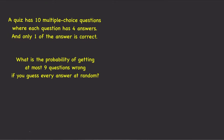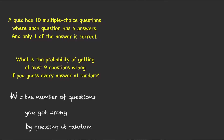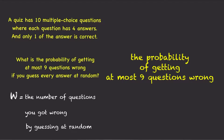What is the probability of getting at most 9 questions wrong if you guess every answer at random? Again, if we let w stand for the number of questions you got wrong by guessing at random, then we can write the probability of getting at most 9 questions wrong by guessing every answer at random as p of w is less than or equal to 9.